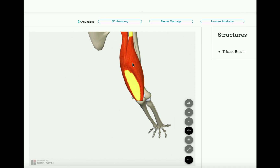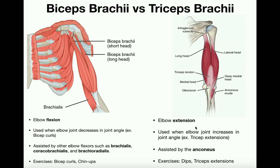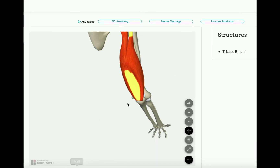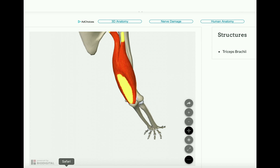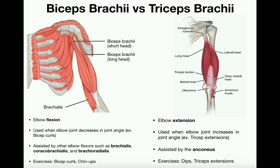The triceps are the major muscles involved in elbow extension — the opposite of flexion — where you're increasing the angle of the elbow joint. Elbow extension would be starting with your arm fully curled up and extending it out to 180 degrees. This process is facilitated by the triceps brachii, and it's also assisted by a small muscle called the anconeus, located near the elbow. The anconeus is an accessory muscle, much smaller than the triceps brachii, but it does also facilitate elbow extension.